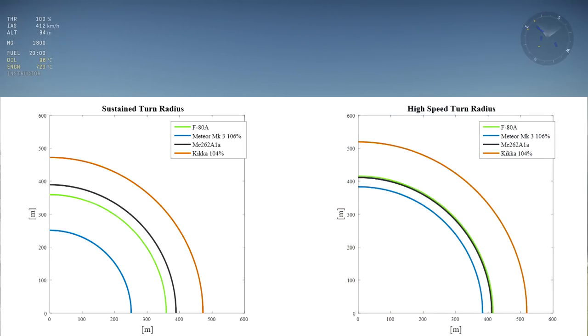At 700 km/h, the Meteor's turn worsens the most but still keeps the advantage, while the ME262 turns a tad tighter than the F-80.